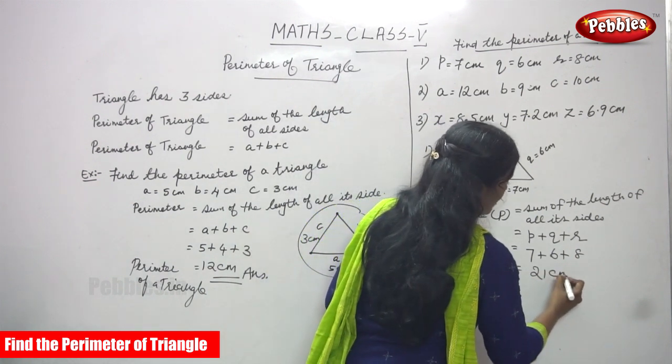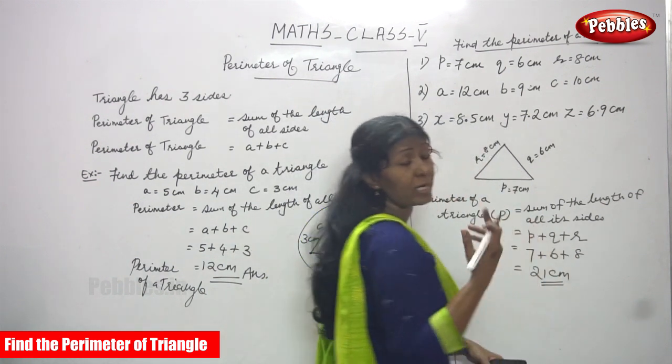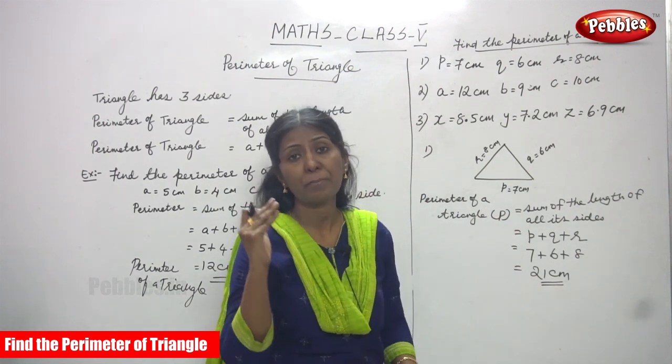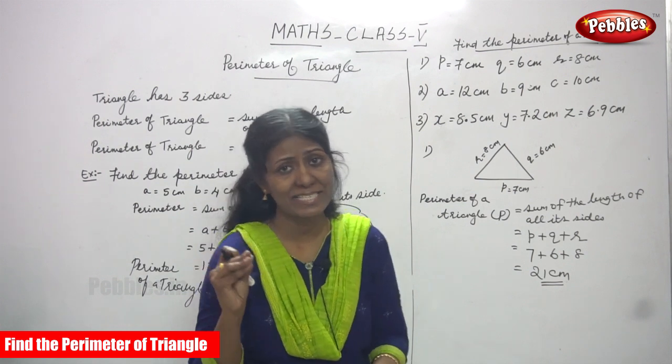So 21 centimeters. You should not write centimeter square or square centimeter because we are finding out only the perimeter. So perimeter means we have to write the unit as it is.